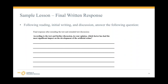Finally, after all this work, you come back to your writing piece. The question now is: 'According to the text and further discussion, in your opinion, which factor has had the most significant impact on the development of the artificial retina?' Students may defend different positions, and as long as they pull evidence from the text and explain coherently why they feel the way they do, that's right. This might be the piece you grade, or you might work with your language arts teacher — you evaluate the content, and the language arts teacher evaluates the writing structure.